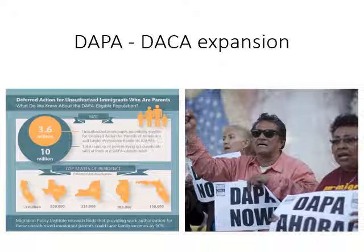Two weeks later, Texas, joined by 26 other states, sued in the U.S. District Court for the Southern District of Texas. DAPA was blocked by an evenly divided U.S. Supreme Court in United States v. Texas, which was decided in 2016.